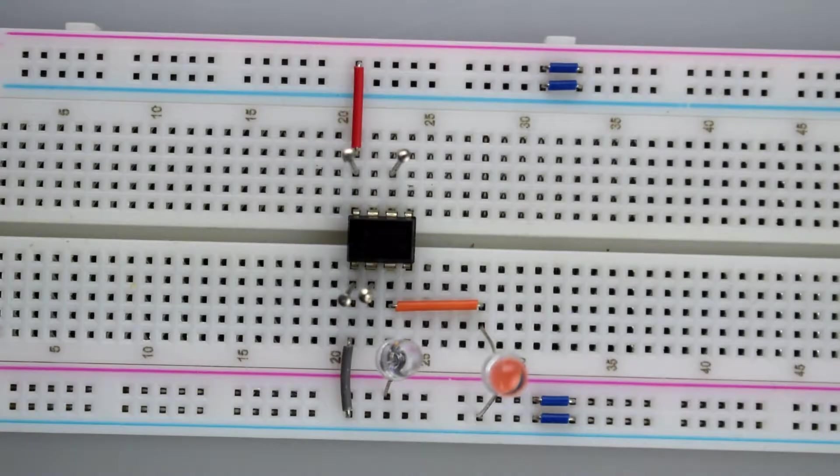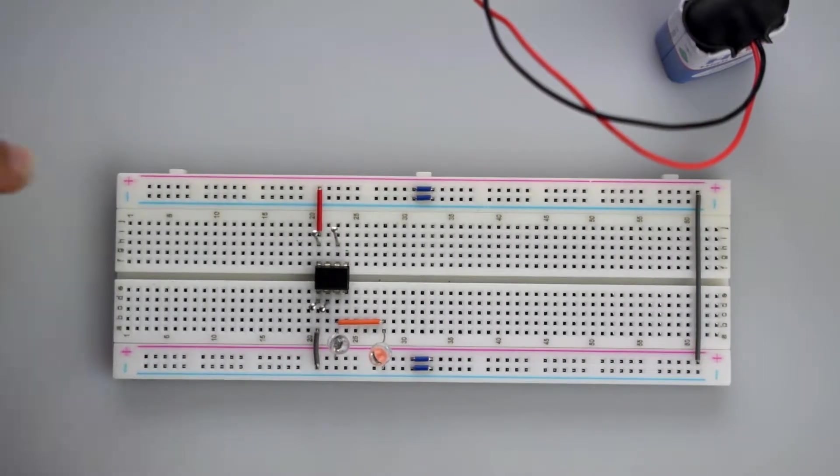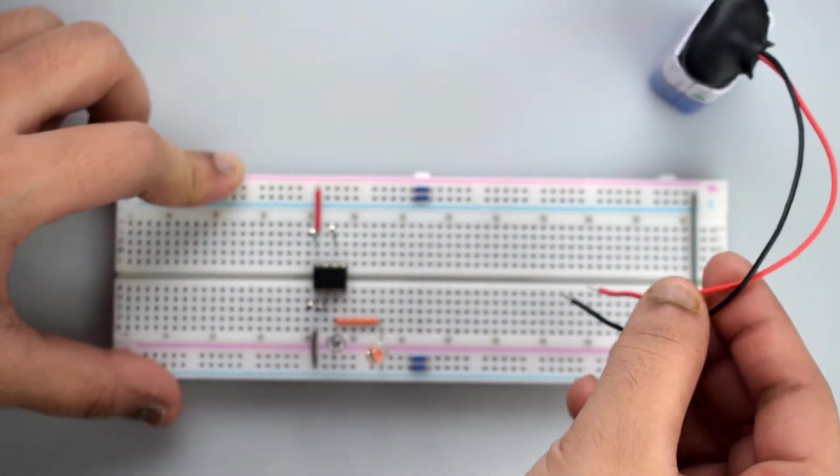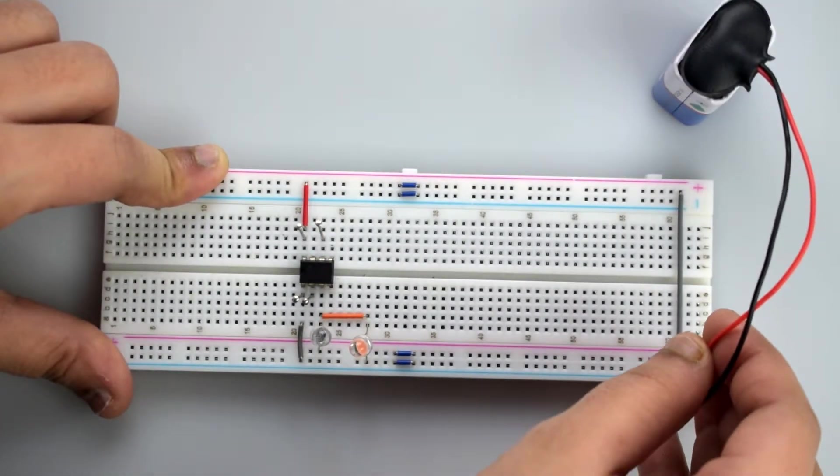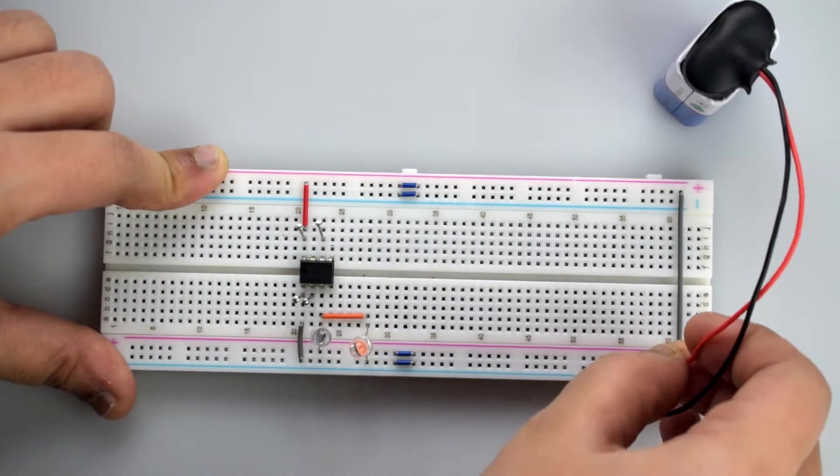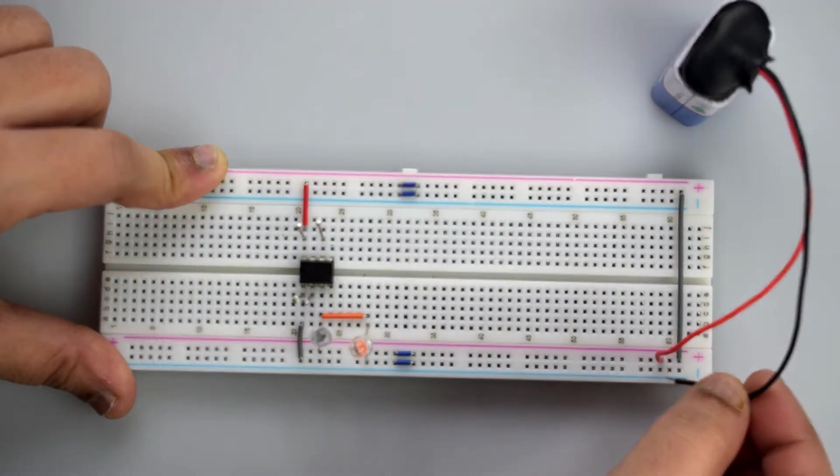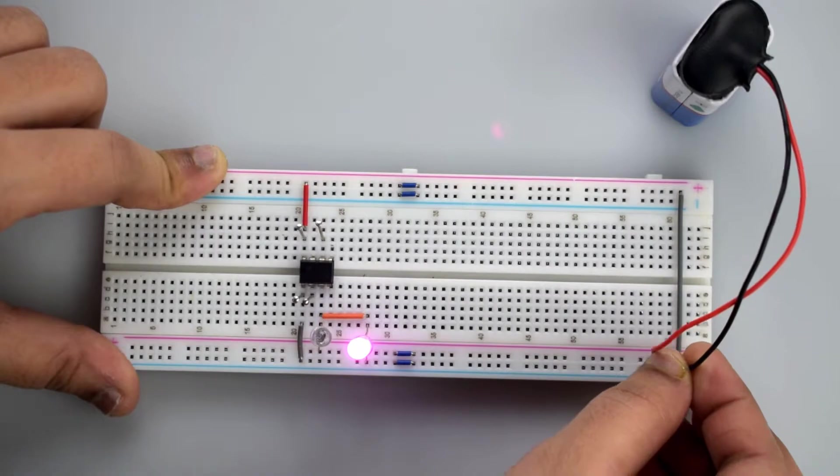So this is our touch sensor project. Now connect the battery. Connect the red wire, that is positive wire, to the positive rail on the breadboard, and the negative wire to the negative rail on the breadboard.